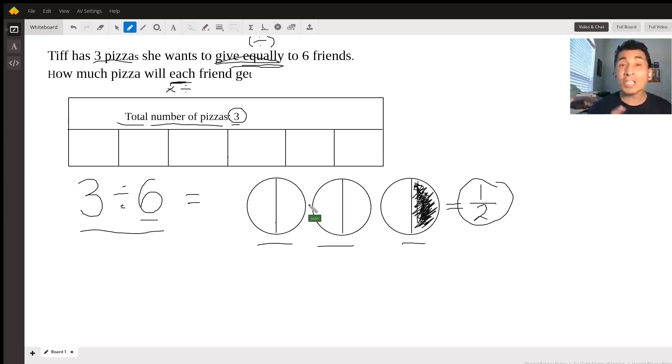Which means that if you divide 3 pizzas between 6 friends, each friend is going to receive one half of a whole pizza. And that is the answer. Thank you, and I hope you enjoyed this class with me. Bye!